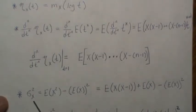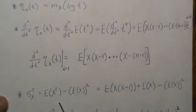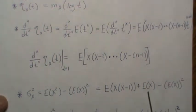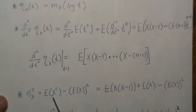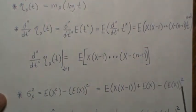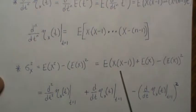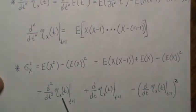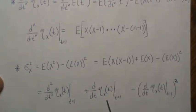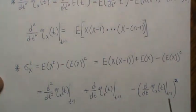How we use this is when we're calculating the variance. If we calculate the second factorial moment and then add the expected value of x, that's equivalent to the standard formula. This is often much easier to calculate than the second moment of a discrete distribution. Then we subtract the expected value quantity squared. So the second derivative of the factorial moment generating function, plus the first derivative evaluated at t equals 1, minus that squared gives the variance.